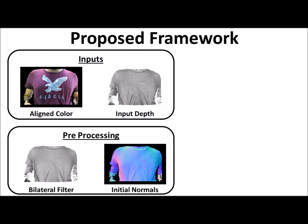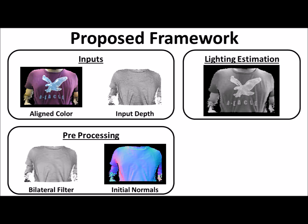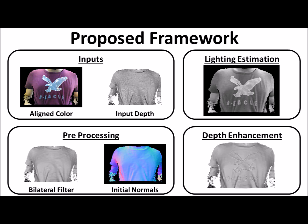We start with a pre-processing stage in which we smooth the raw depth image with a bilateral filter and estimate rough normals. We move on to recover the scene illumination and albedos, from which we build a model that relates the surface geometry to the intensity image. Finally, we recover high-quality depth in a shape-from-shading fashion by optimizing depth values to achieve the best fit between the shape's geometry and the intensity image.